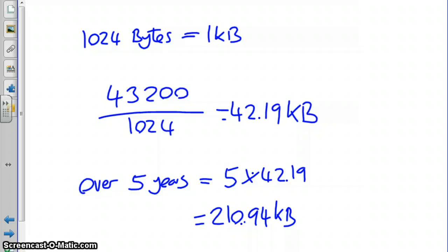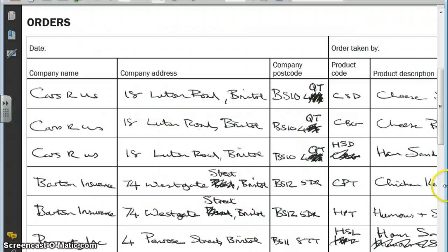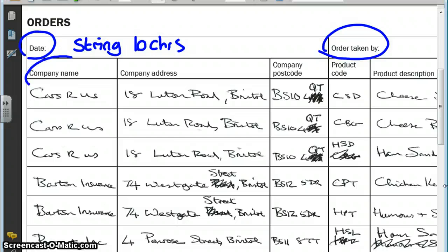Now we can look at this in relation to Mia's. If we look at one of Mia's order forms, we can see there that the date is recorded. So this would be a string of 10 characters. And so therefore we've got 10 bytes for the date per order. The order is taken by, we need to store the company name, the company address, the company postcode, the product code, the product description. This continues then with the product price, which goes off the screen, and the total price.